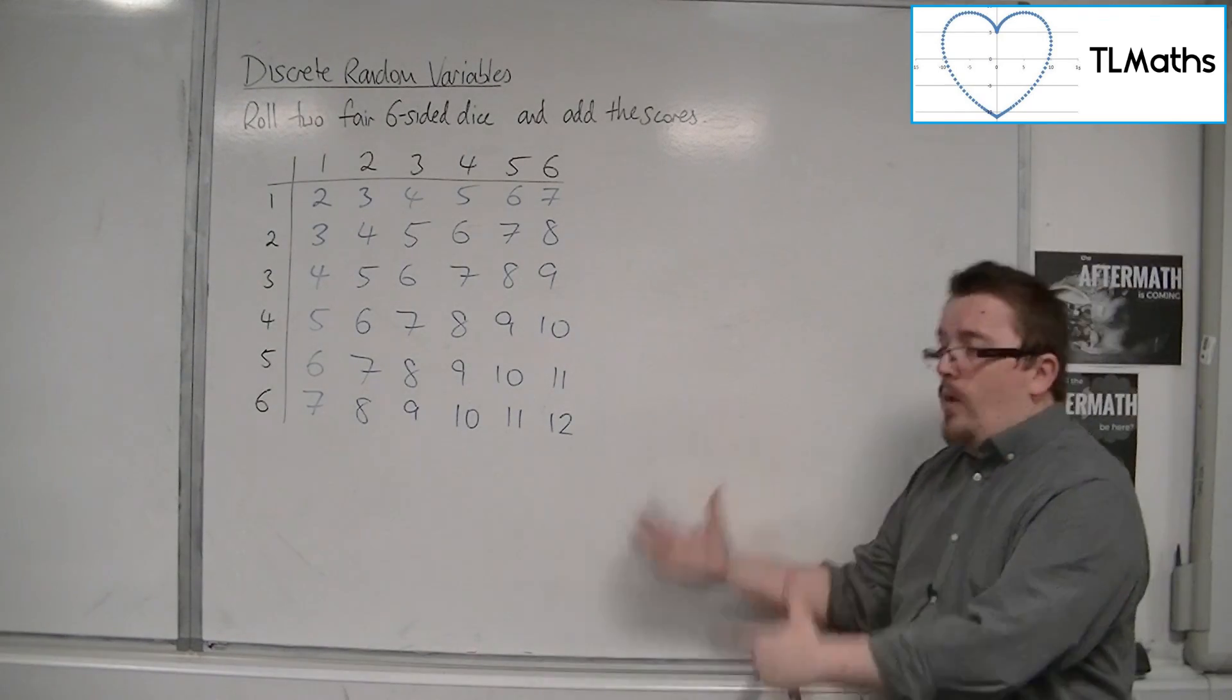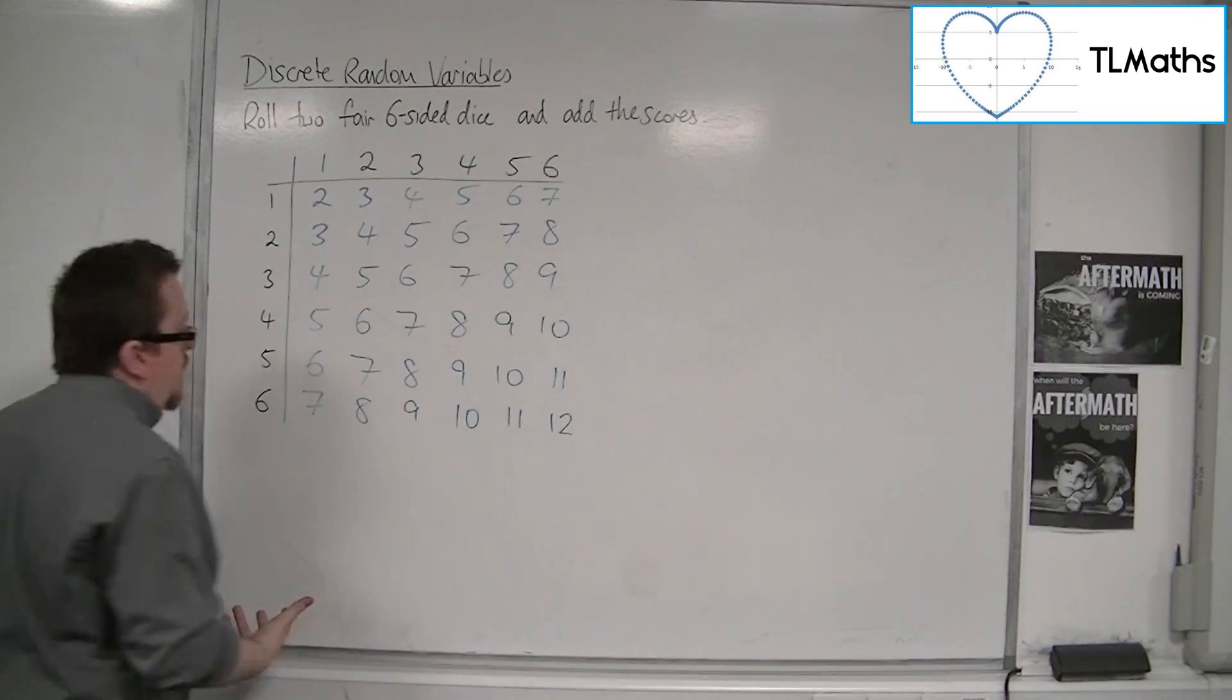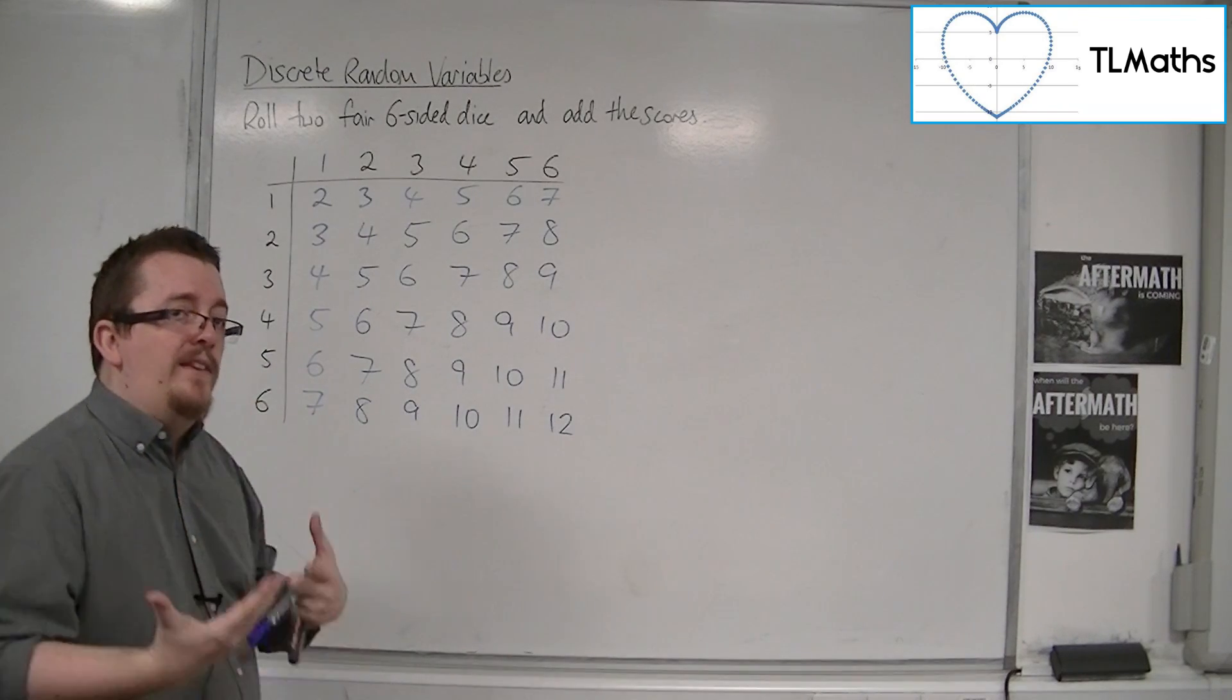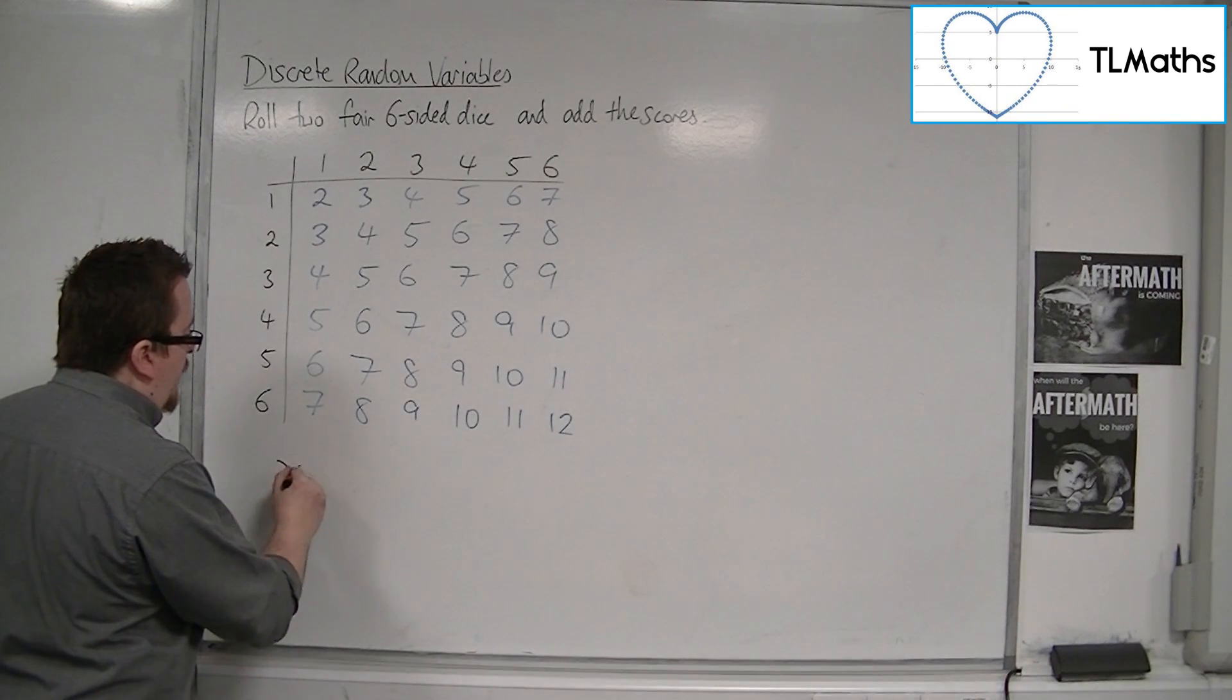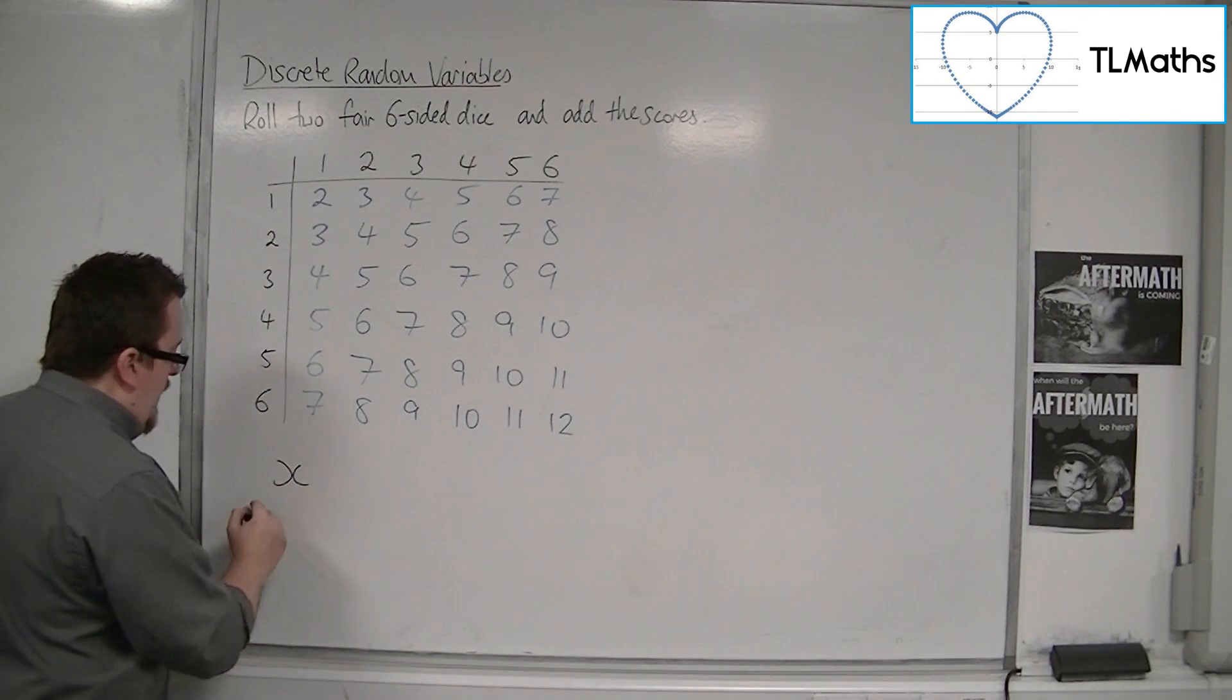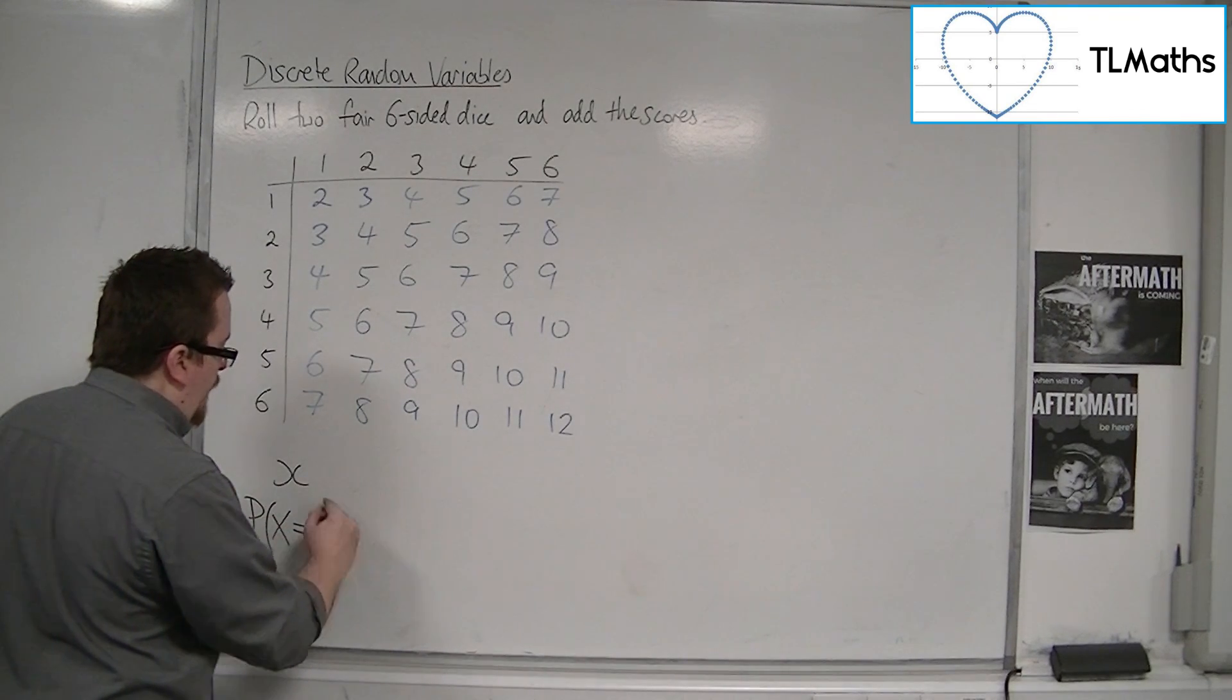So this is one way of displaying it. What I preferably want is a way of representing the actual probabilities of getting these scores. We're going to set up a new table where we're going to have the values of x, so the possible scores that it can take, and the probability of the score being each of those.